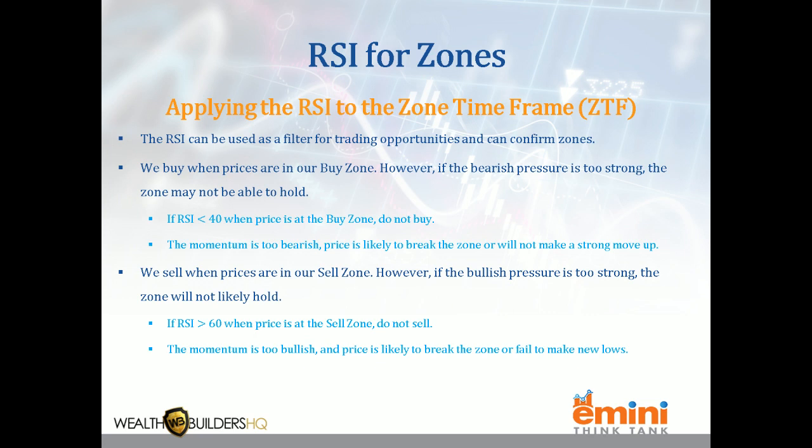When prices are up in our sell zones and we're in an overall downtrend, we typically want to sell or sell short. However, what we do not want is too much bullish pressure — if we have too much bullish pressure, it could carry price through the zones. So when it comes to a sell zone, if the RSI is above 60, that's too much bullish momentum for the zone to hold and we do not sell. It's a pretty simple filter: looking to buy, make sure RSI is not below 40; looking to sell, make sure RSI is not above 60.